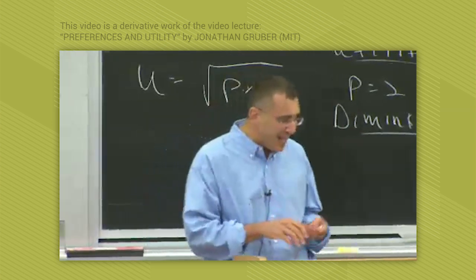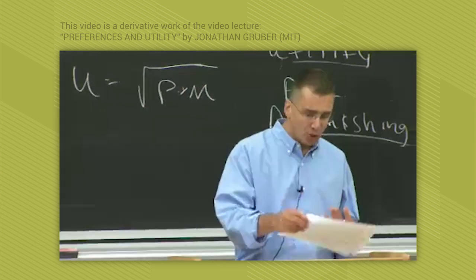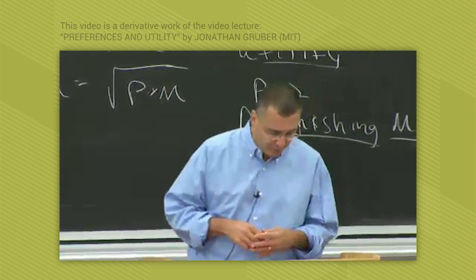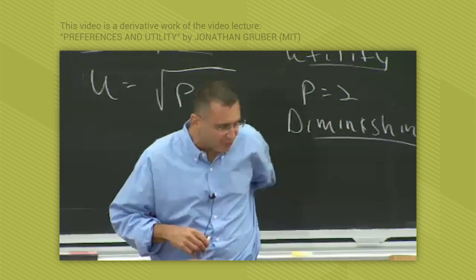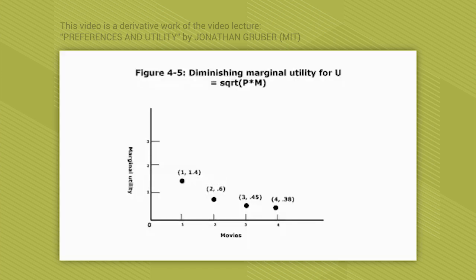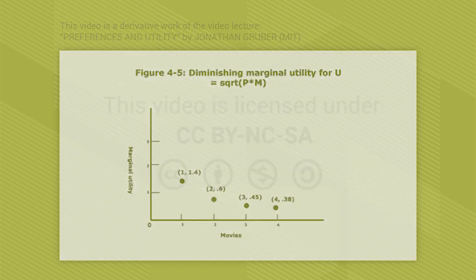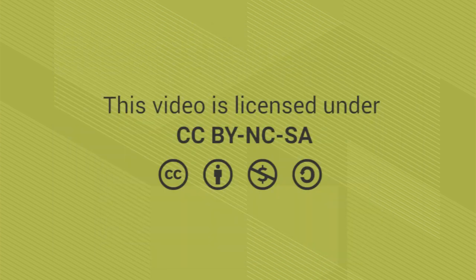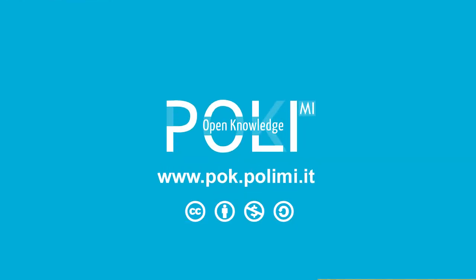So we can actually graph your marginal utility. That's what Figure 4-5 is — it's a graph of your marginal utility.